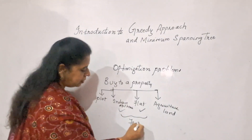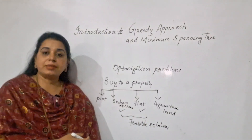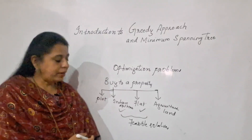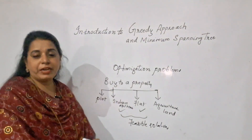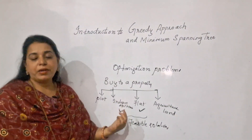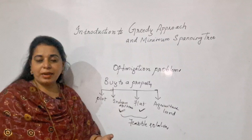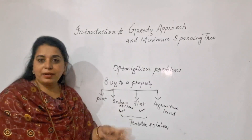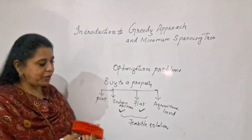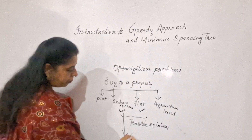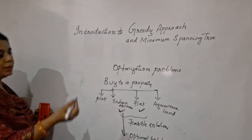These two options — independent house and flat — are called feasible solutions. Now if there is an additional condition that you must get maximum profit later from the property, you compare the two. An independent house gives maximum profit compared to a flat because it has its own land, which retains value over the years, whereas a flat is a shared portion. The option you finally select — the independent house — is the optimal solution.